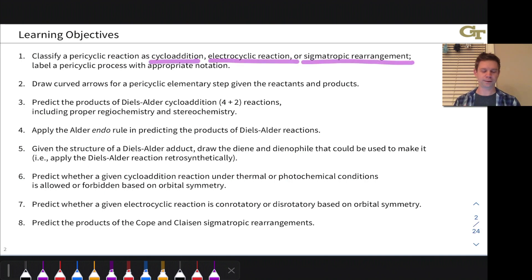We're going to learn how to use curved arrows with pericyclic elementary steps, which tends to be pretty straightforward because electron flow is cyclic. So as long as we know how to shift pi bonds and sigma bonds around, we'll find actually that there are often two ways to go about drawing curved arrows for a pericyclic elementary step that are in every way, shape, and form equivalent.